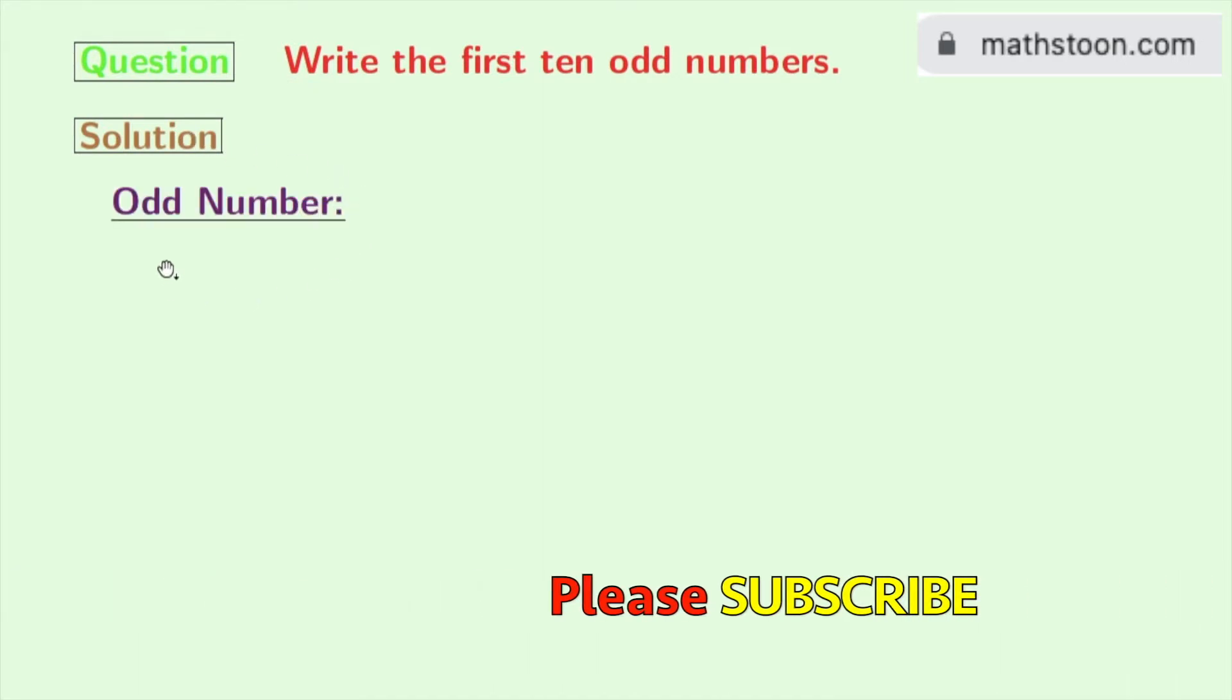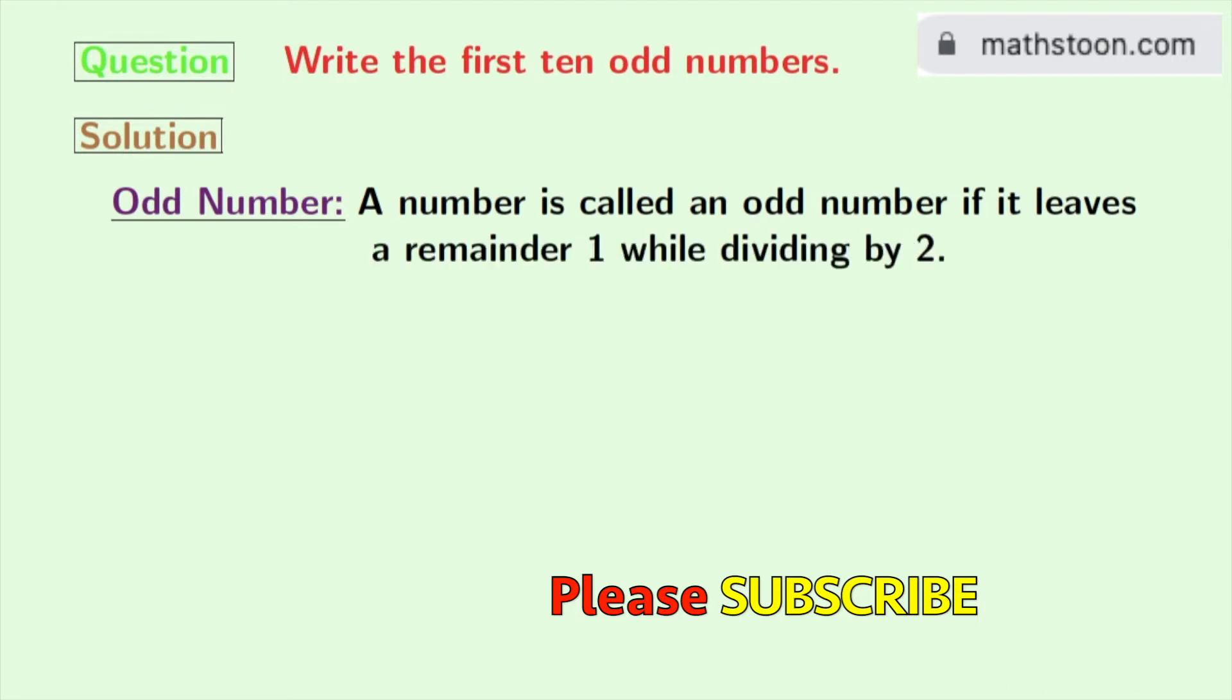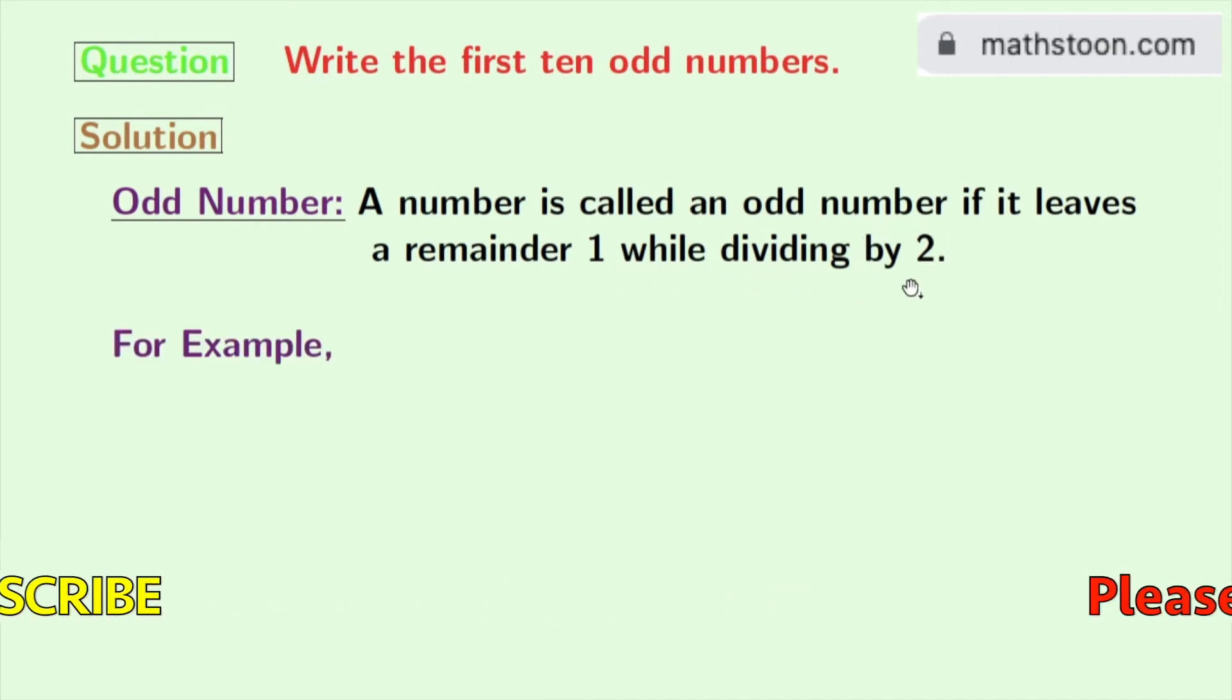Let us first learn the definition of an odd number. A number is said to be an odd number if you get 1 as a remainder when you divide that number by 2. Now let us consider this definition with an example.